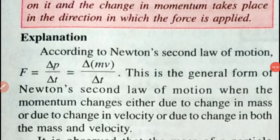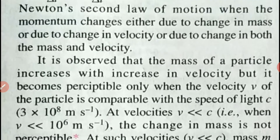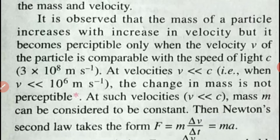Coming to the page 65 explanation: according to Newton's second law of motion, F equals dP/dt, which is m·dV/dt. This is the general form of Newton's second law of motion when the momentum changes either due to change in mass, or due to change in velocity, or due to change in both mass and velocity. It is observed that the mass of a particle increases with the increase in velocity, observable only when the velocity v of the particle is comparable with the speed of light.